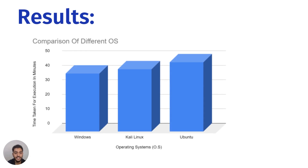As seen in the graph, Windows took less time to sort the million numbers compared to both Kali Linux and Ubuntu. During the test, Windows was using about 4GB of RAM while Kali Linux and Ubuntu were using around 1GB of RAM. A key observation was that in Kali Linux and Ubuntu, only one CPU core was at 100% utilization with the remaining three at minimal usage, giving overall CPU usage of around 23–26%. In Windows, two cores were at 100% and later cores 4 and 5 were also at 100% usage.